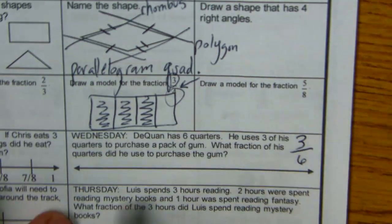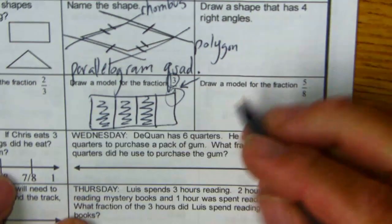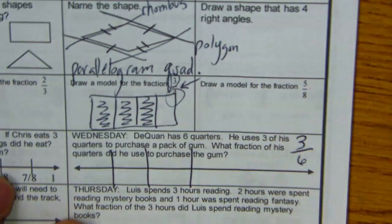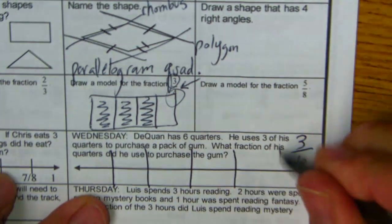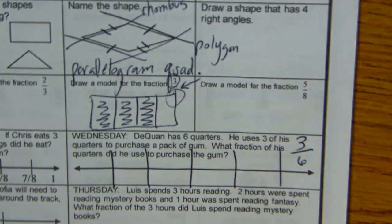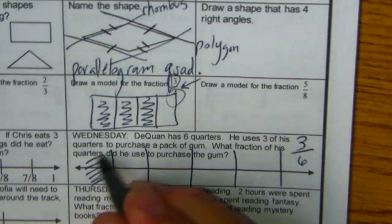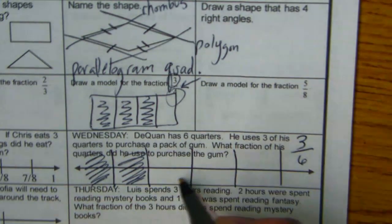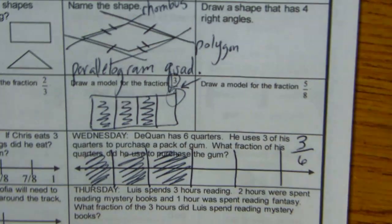But how could I show that? We need to cut this number line into 6 slices. Cut it in half, and we got 3 slices over there, 3 slices over there. One out of 6, two out of 6, three out of 6. That's what it would look like if you were to make a model.